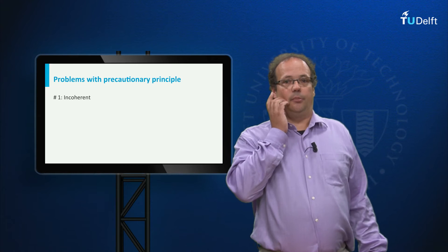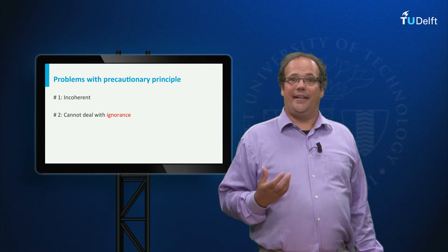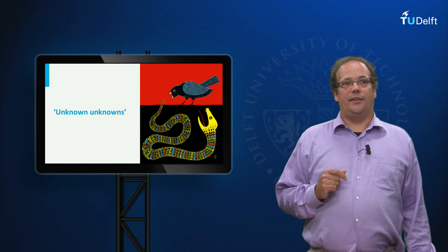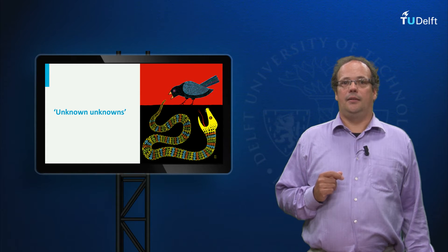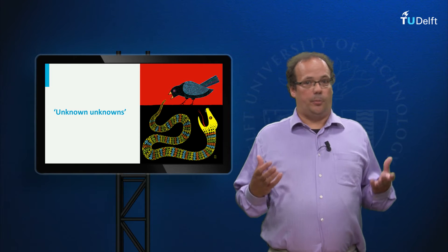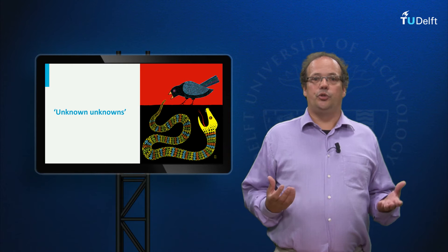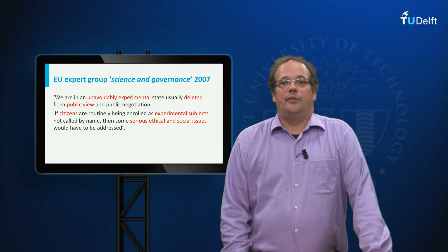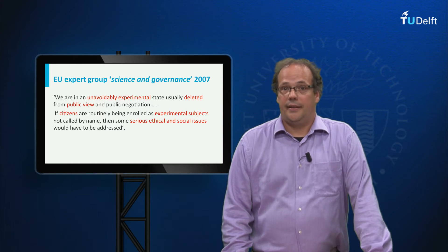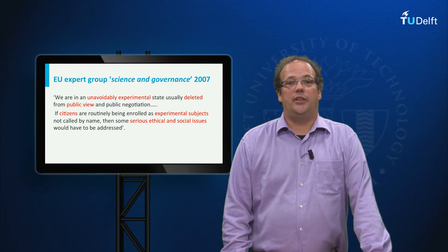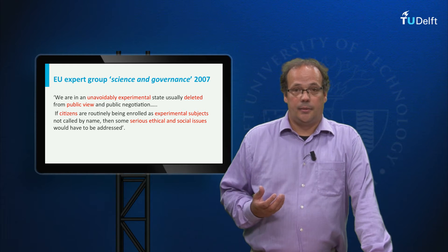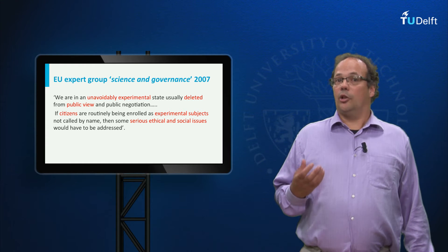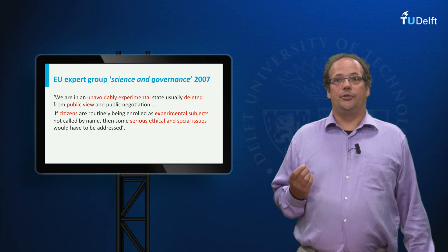The second problem of the precautionary principle is that it cannot deal with ignorance. Ignorance may lead to what is known as unknown unknowns, and this picture gives a nice illustration of what unknown unknowns are. This means there will always be surprises and unexpected developments when we introduce new technology into society. The European expert group on science and governance expressed this in 2007: 'We are in an unaffordably experimental state, yet this is usually deleted from public view and from public negotiation. But if citizens are routinely being involved without negotiation as experimental subjects in experiments which are not called by name, then some serious ethical and social issues would have to be addressed.'